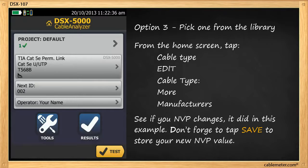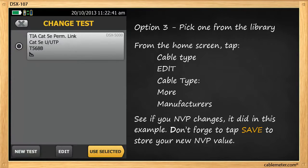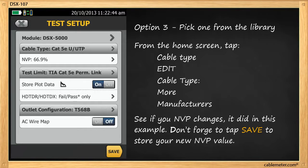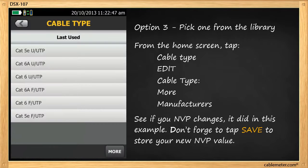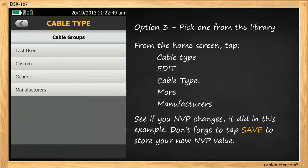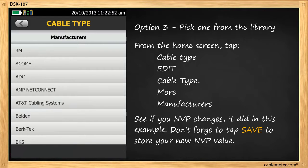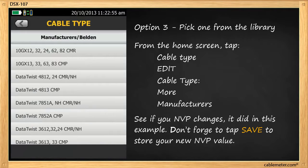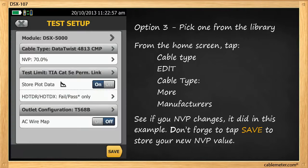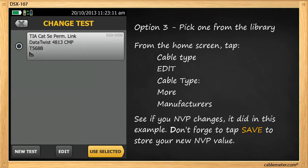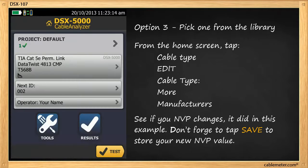The final method is to choose one from the cable library. From the home screen, tap your cable type, Edit. And where you see Cable Type, tap More. You'll see manufacturers at the bottom. I'll randomly pick Belden and select a cable. You'll see the MVP value changes to 70%. When you change the cable type in the library, it looks up the database in the tester and presents you with the value that's in there. Tap Save, select it, and you'd be ready to begin testing.